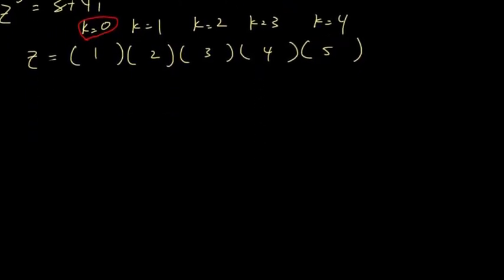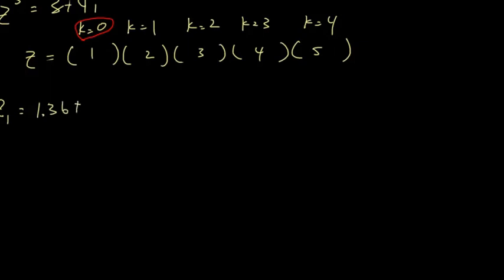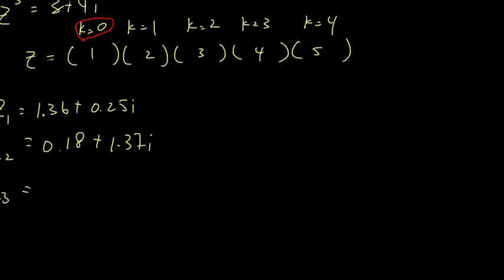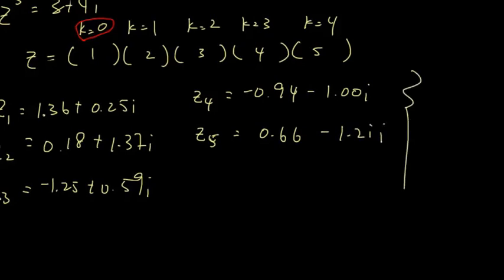I've done the rectangular form already. z1 = 1.36 + 0.25i. Z2 = 0.18 + 1.37i. Z3 = −0.94 − 1.00i. And z5 = 0.66 − 1.21i. So these are the roots in rectangular form — that answers the question.